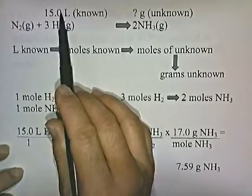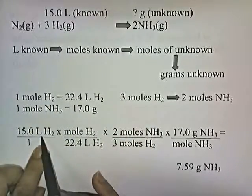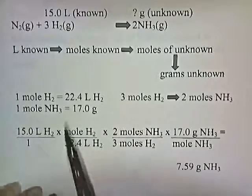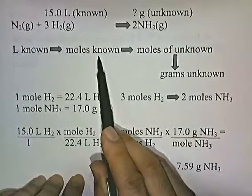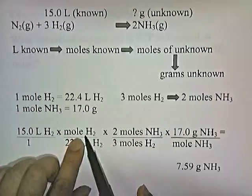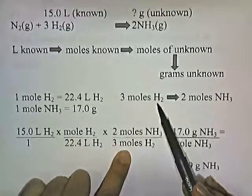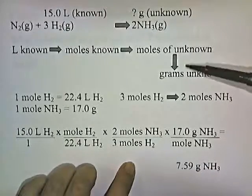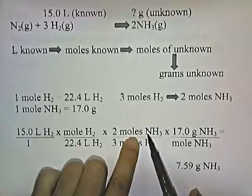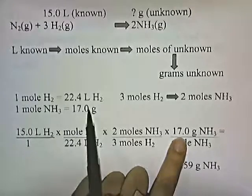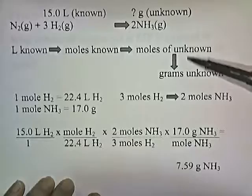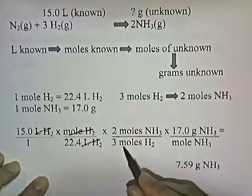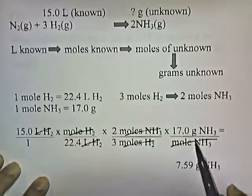We take 15 liters of known and put it over 1. We have liters of H₂ on top and want to get rid of it, so we put 22.4 liters of H₂ on the bottom and one mole of H₂ on top — that converts liters of known to moles of known. Then we put 3 moles of H₂ on the bottom and 2 moles of NH₃ on top — that converts moles of known to moles of unknown. Then we put one mole of NH₃ on the bottom and 17 grams of NH₃ on top. Liters of H₂ cancel, moles of H₂ cancel, moles of NH₃ cancel, and we're left with grams of NH₃.